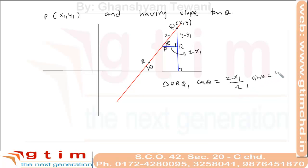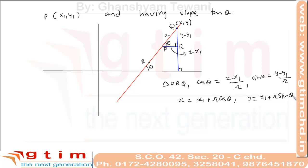Now in triangle PRQ, we have cos(theta) = (x - x1) / r and sin(theta) = (y - y1) / r. From this, x = x1 + r·cos(theta) and y = y1 + r·sin(theta). So coordinates of point Q are (x1 + r·cos(theta), y1 + r·sin(theta)).